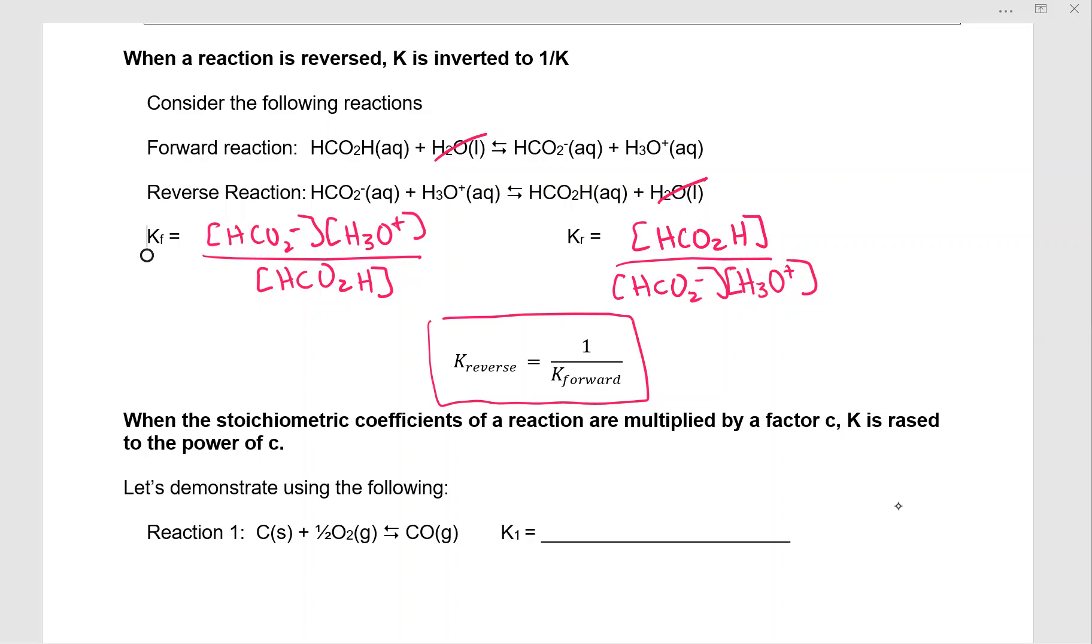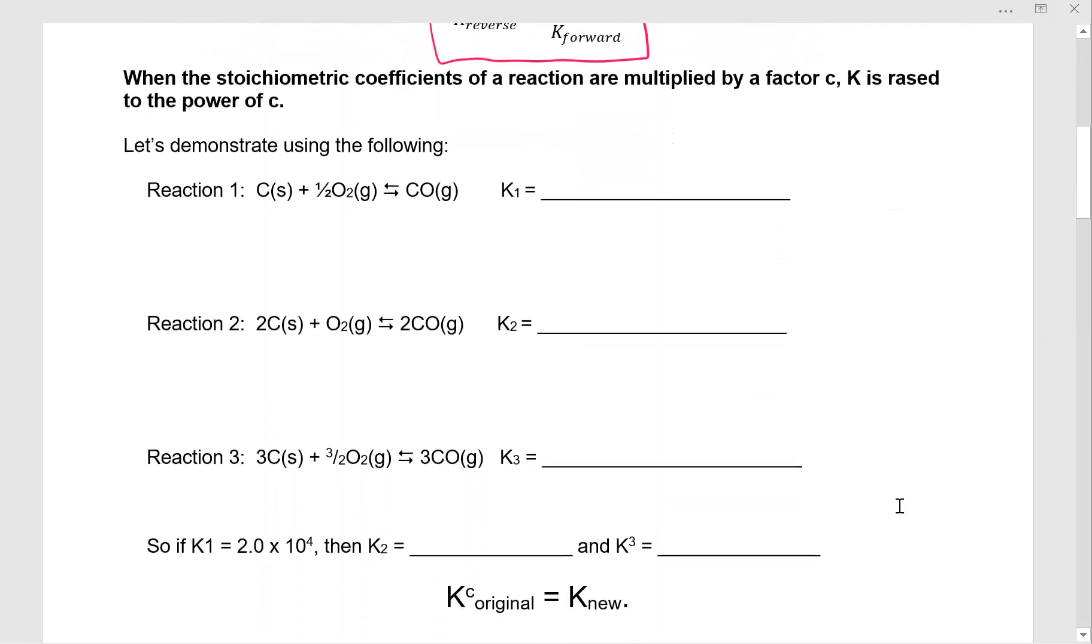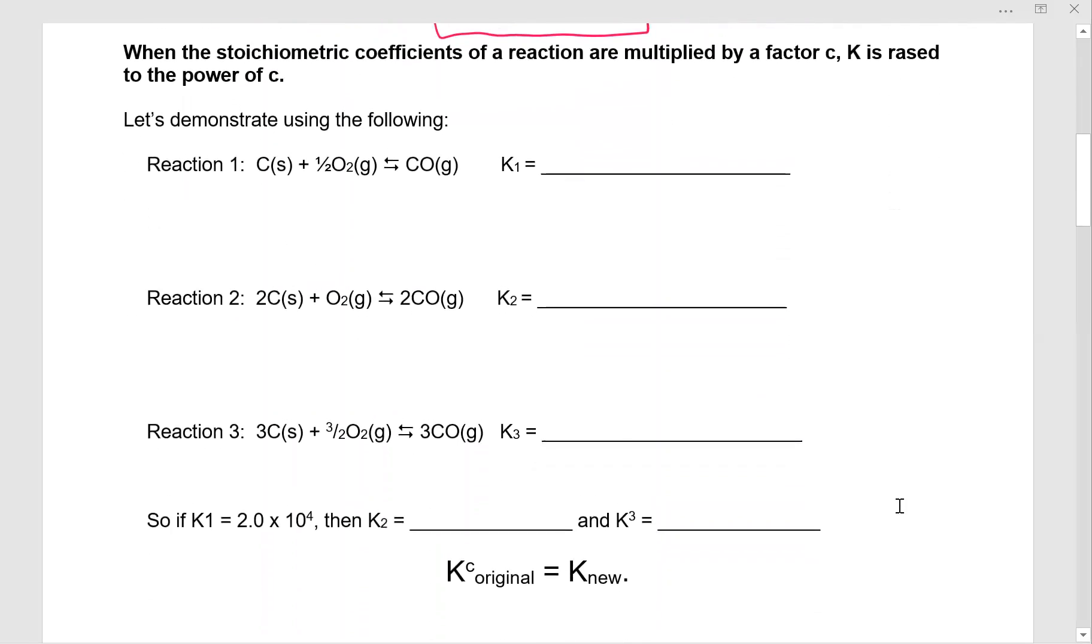Let's take a look at the next rule. When the stoichiometric coefficients of a reaction are multiplied by a factor c, K is raised to the power of c. That's a mouthful, but it's actually very straightforward.